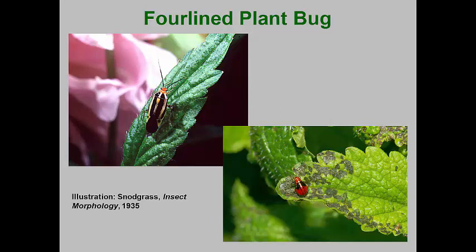This pest overwinters as eggs in stems of potential host plants. In mid-spring, as favored host plants are setting out their new growth, the tiny nymphs hatch and quickly move to the new plant growth to begin feeding. Their feeding spots can initially look like pit feeding of flea beetles, but if you look closely, the upper and lower epidermis will be intact. The nymphs prefer to hide and feed inside the unfolding leaves where they are easily missed.